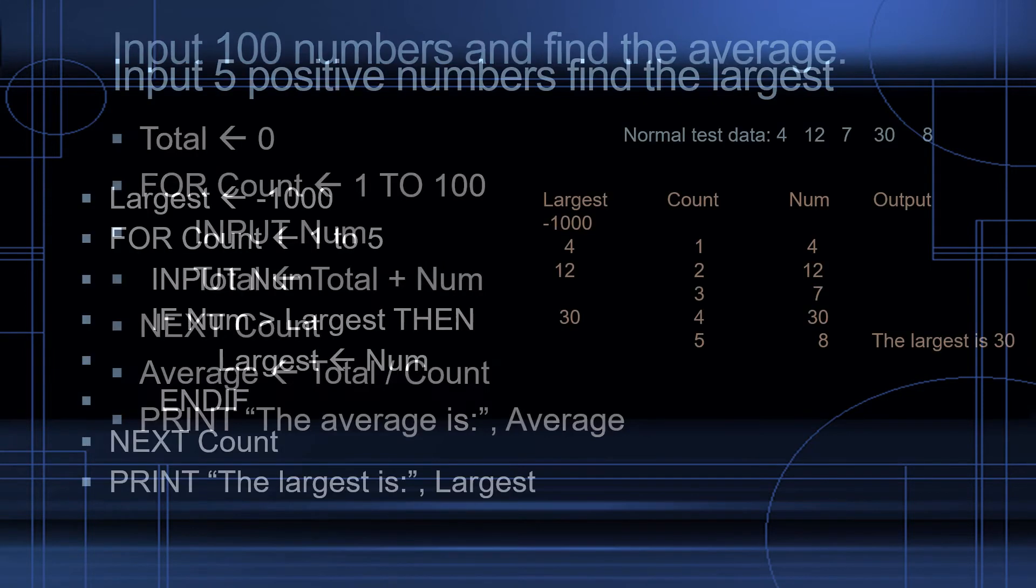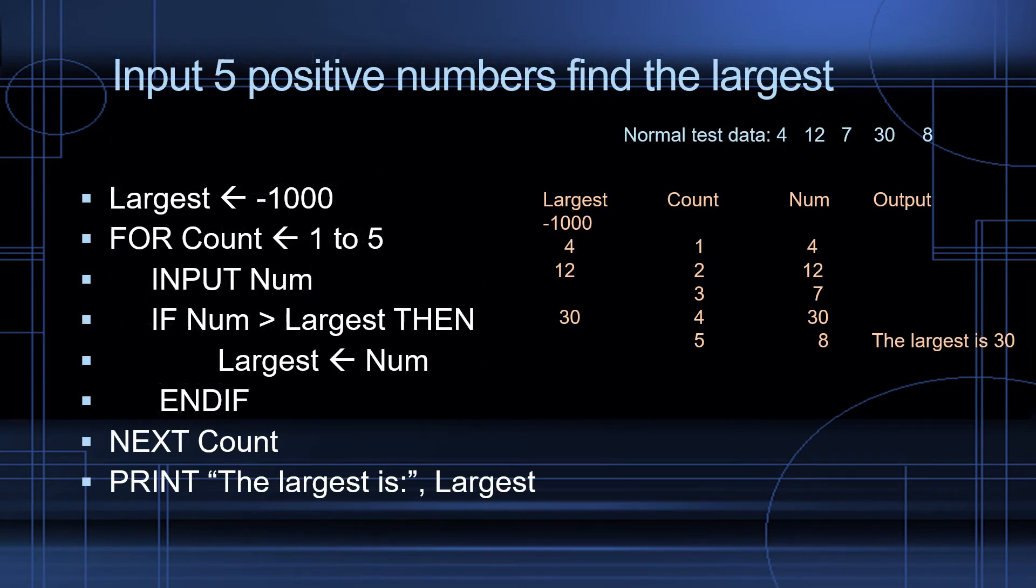Another algorithm that typically comes is looking for the largest. So let's say we have this example, input 5 positive numbers and find the largest. Here's our algorithm. First, we need to initialize largest to a number that's smaller than any of our inputs are going to be. So if the question says input 5 positive numbers, you could initialize largest to zero, or if you want to be on the safe side, just initialize it to a negative number. Now, for count, count runs from 1 to 5. Input the first number.